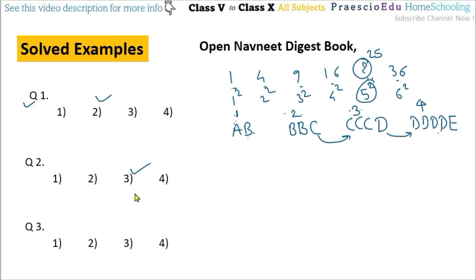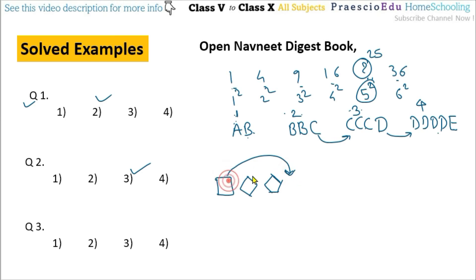Question number 3: which figure will come in the place of the question mark in the given pattern? There is a square, then a pentagon — the square moves to the right end, then the kite shape, then pentagon. The shapes keep moving to the right. So at the question mark, it should start with the pentagon, then square, then kite, and this pattern is given in option number 4.